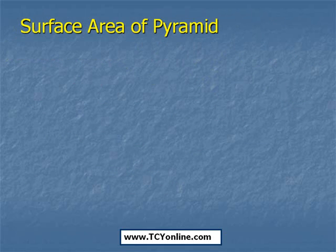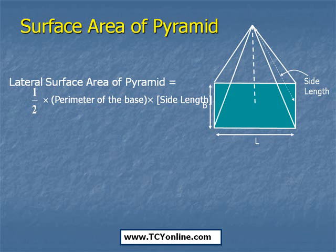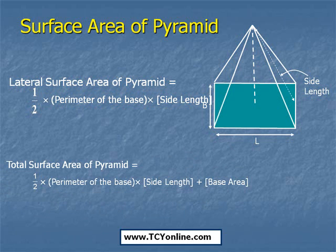Now let's move to surface area of pyramid. Surface area of a pyramid is divided into two parts. First is lateral surface area, which is half times the perimeter of the base times the side length. Total surface area of a pyramid is simply lateral surface area plus the area of the base, which means total surface area equals 1/2 × perimeter of base × side length + base area.